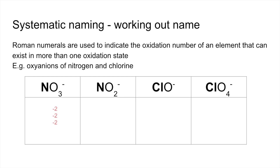For NO₃⁻: three oxygens × (−2) = −6; to get the overall −1 charge, nitrogen must be plus five. This is called the nitrate(V) ion, using the Roman numeral V in brackets. For NO₂⁻: two oxygens × (−2) = −4; nitrogen must be plus three to give −1 overall. This is the nitrate(III) ion. The alternative names are nitrate ion (for NO₃⁻) and nitrite ion (for NO₂⁻), but in an exam, you would be asked for 'nitrate' with a Roman numeral.